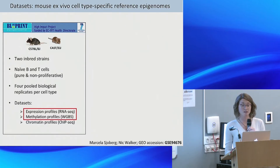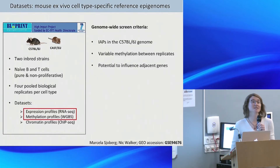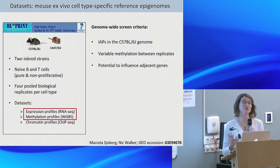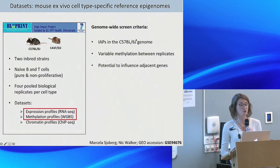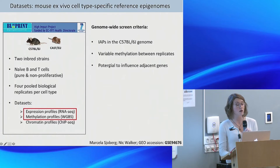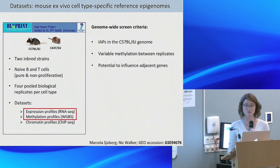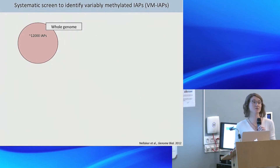The screen we developed focused on IAPs first, since the classic examples had IAP insertions. We focused on searching for variably methylated IAPs in the black/6 genome and IAPs that may have the potential to influence adjacent gene expression, as we see for agouti viable yellow. In black/6, there are approximately 12,000 IAPs. We started with all of these and narrowed them down to ones present in the black/6 genome but absent in the castaneous genome, and then further to those near differentially expressed genes between the two strains.